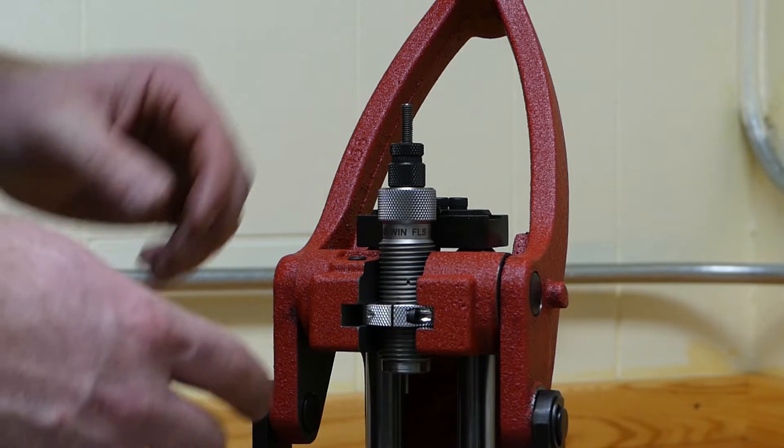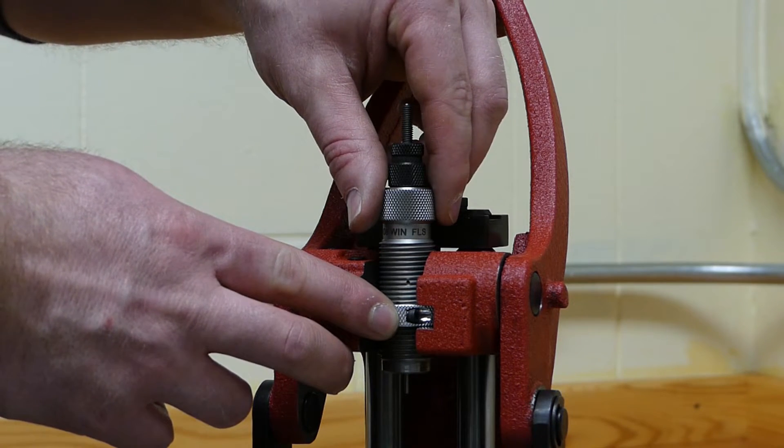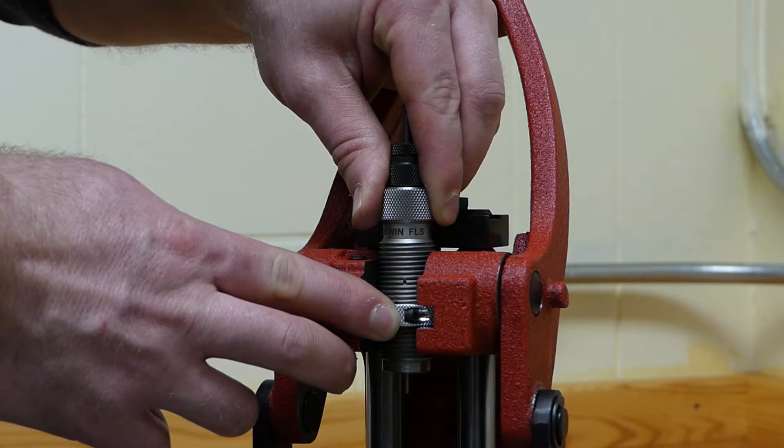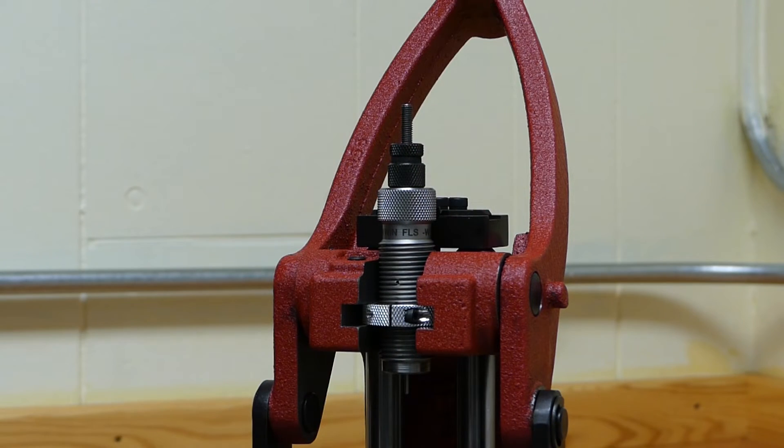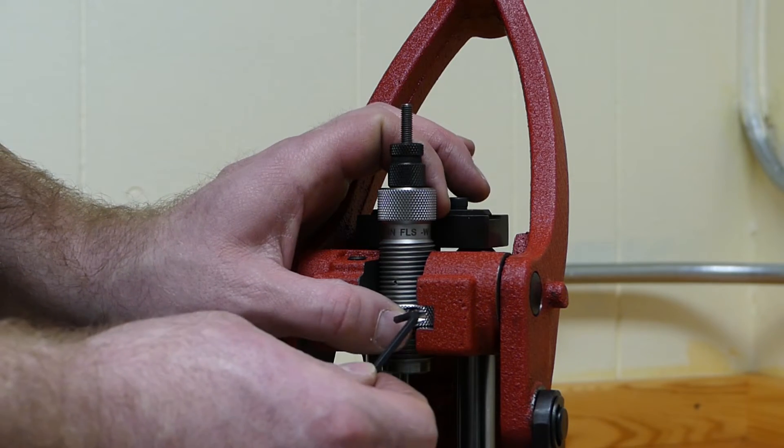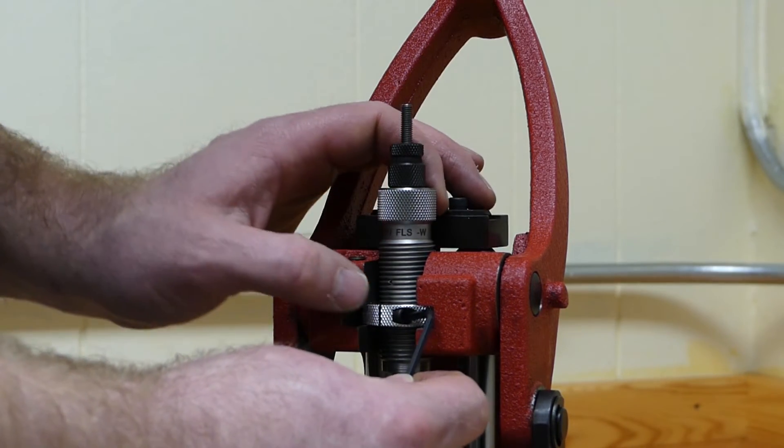If we need to make some slight adjustments, if we need to go a little deeper, then we're just going to do that in eighth turn increments until we have found that shoulder bump that we would like. And then once we've found it, we're going to secure that lock ring on the die.